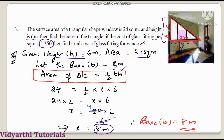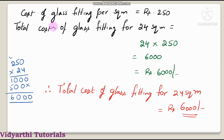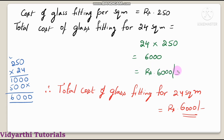Now find the total cost of glass fitting. The cost of glass fitting is Rs. 250 per square metre. For 24 square metres, total cost = 24 × 250 = Rs. 6,000. So total cost of glass fitting for the window is Rs. 6,000.